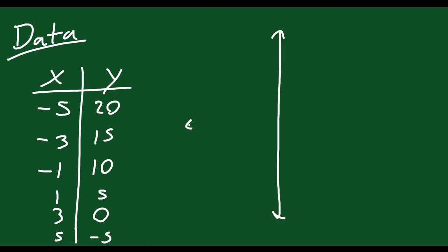You can interpret the set of data, these numbers in your table of values, as being points. So (-5, 20) is a point. (-1, 10) is a point. Just like that for all of these numbers. You can go ahead and you can graph them on this Cartesian plane.